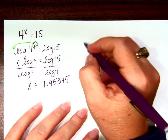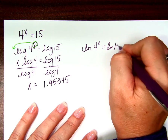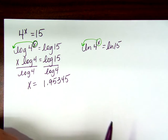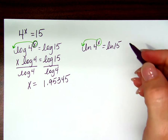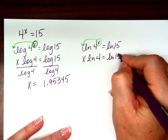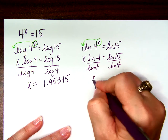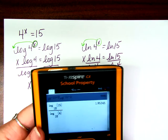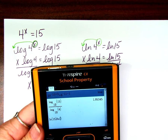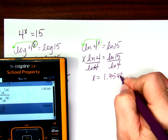I could also take the natural log of both sides. The x still comes down in front as a multiplier, so I'd have x natural log of 4 equals natural log of 15. x equals the natural log of 15 divided by the natural log of 4, which gives 1.95345 — the same answer.